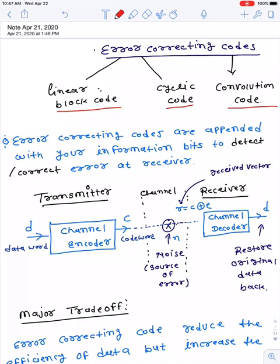Channel coding is a method in which error correcting codes are appended to your information bits to increase reliability in the system. If the receiver is getting an information bit, the receiver is totally blind to check whether the received information is correct or has encountered some error between transmitter and receiver during propagation. It is essential that the receiver should locate the error, identify it, and then correct it.